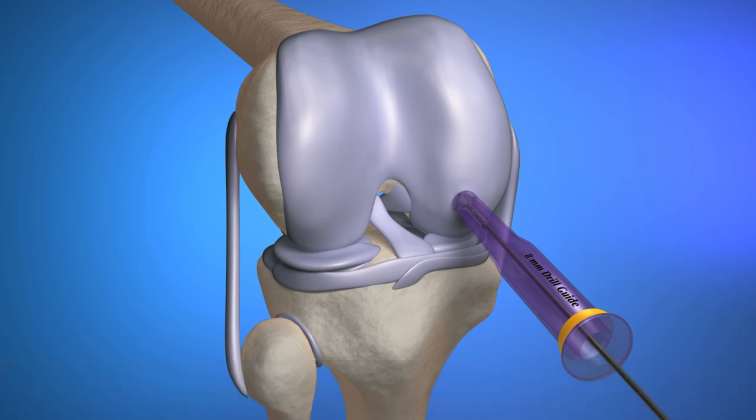Ensure the drill guide is perpendicular to the recipient site by maintaining pressure while positioning the drill guide until the perpendicularity rod is centered. While maintaining the guide cutter position, turn the perpendicularity rod counterclockwise until it disengages with an audible click or slight recoil. Remove the rod.